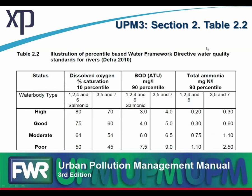We have targets that have been publicized quite widely. Here's an example from the Urban Pollution Management Manual, third edition, which is a digitized version. You can see what kind of levels we need to satisfy and identify whether our surface water body is at a poor, moderate, good, or high status. We need to achieve good status — that's the target.